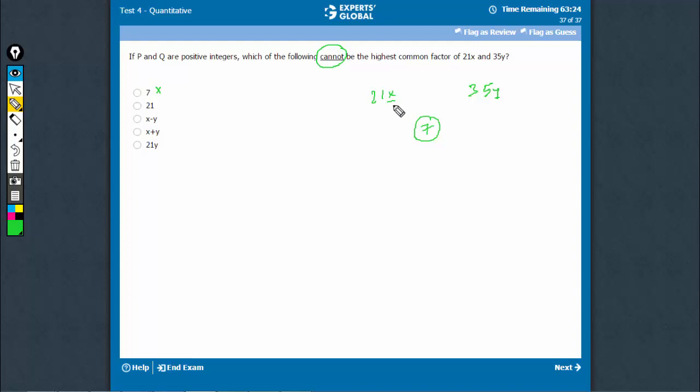21, when x and y are both multiples of 3, for example, the case when x is equal to y is equal to 3, 21 would be the highest common factor. Therefore, this is also possible.